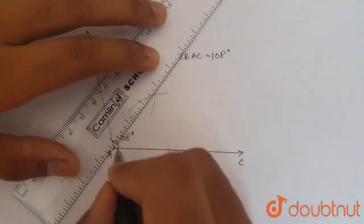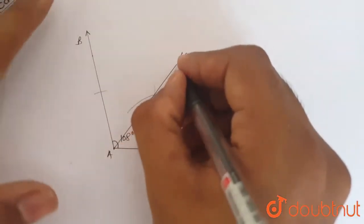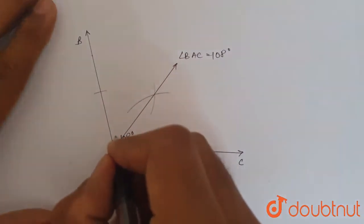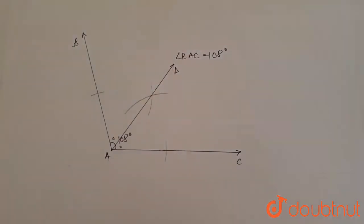So when we join point A with this point of intersection, the ray that we get is the angle bisector of angle BAC. Let us name this point D and now let us measure angle DAC.